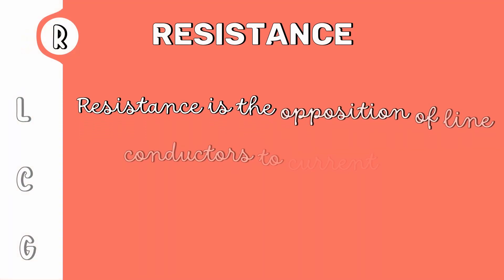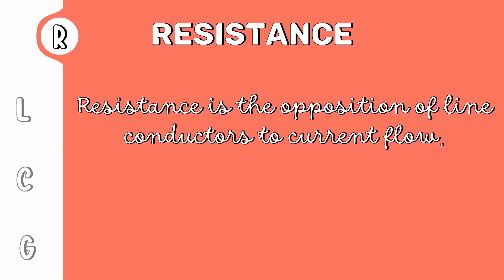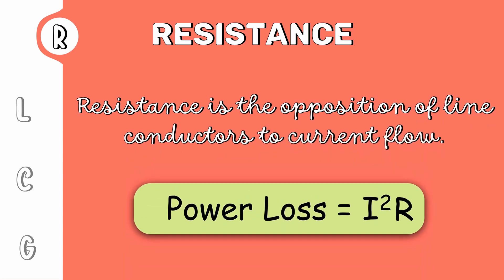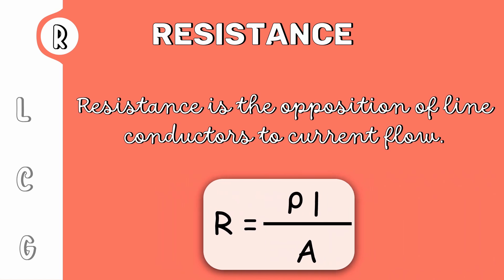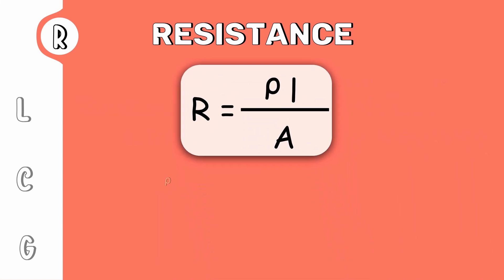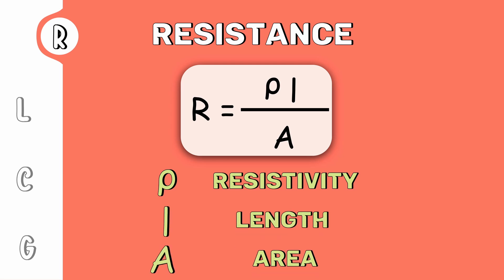Resistance is the opposition of line conductors to current flow. The power loss in the transmission line depends mainly on this resistance. The resistance of the line is given by R equals rho L by A, where rho is the resistivity of the material, L is the length of the conductor, and A is the area of cross-section of the conductor.